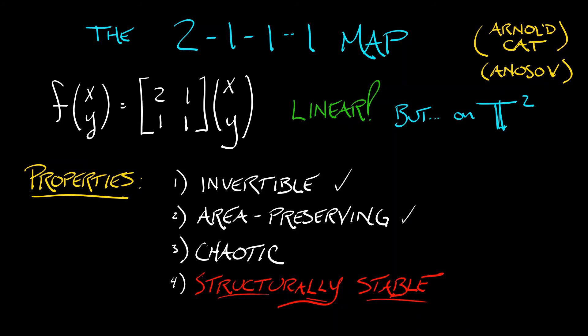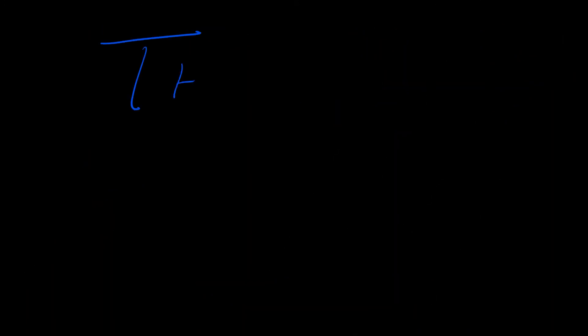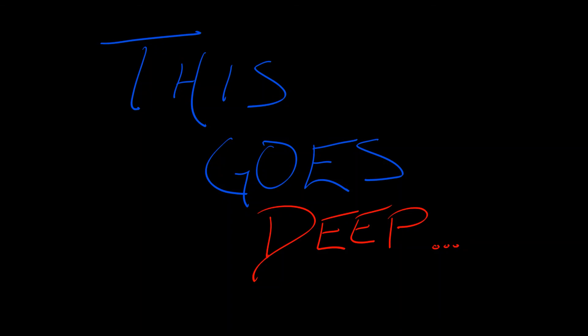So that's the 2111 map, and it's a great example of a chaotic dynamical system on a torus. Now, gotta be honest here. We're really just touching the surface of a subject that gets very deep, very quickly.